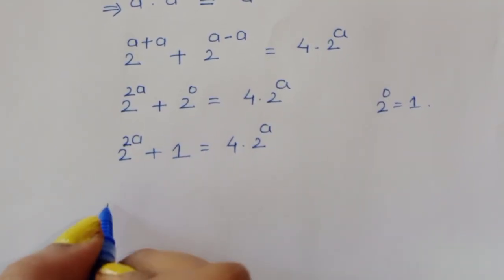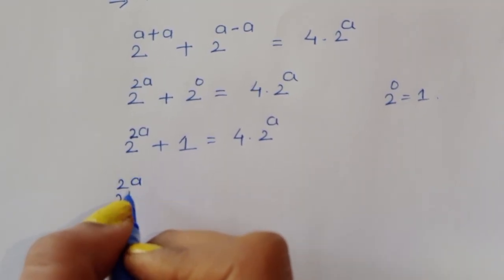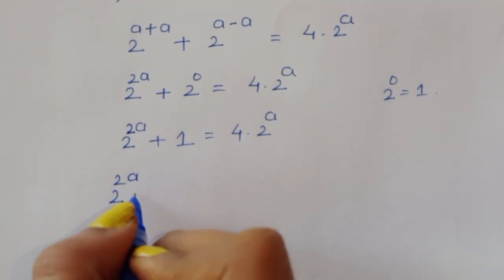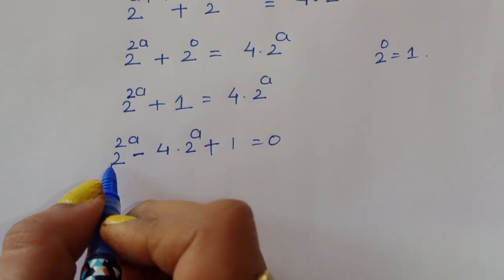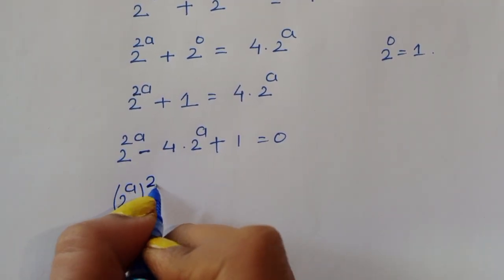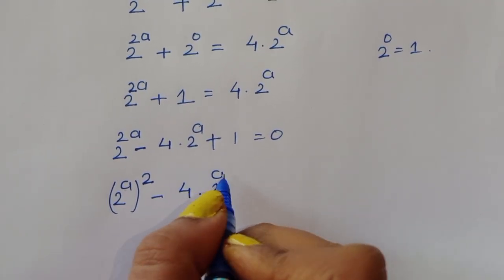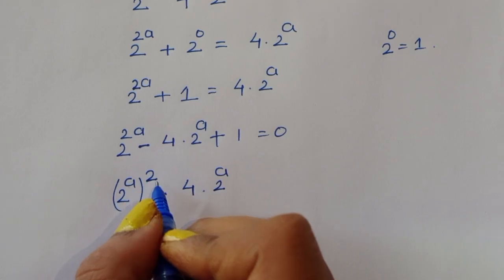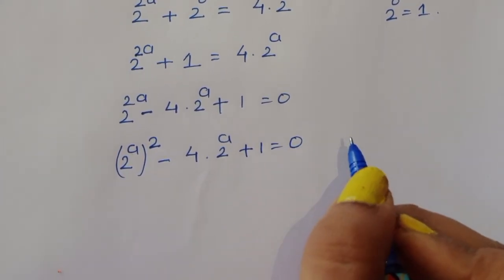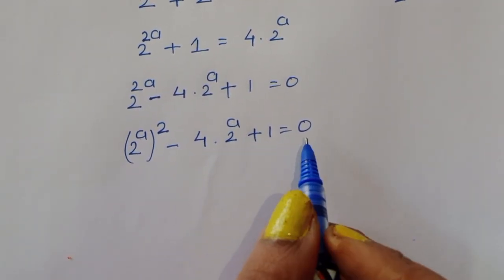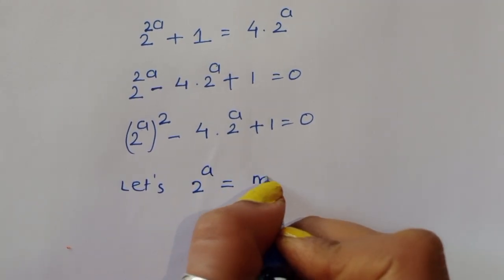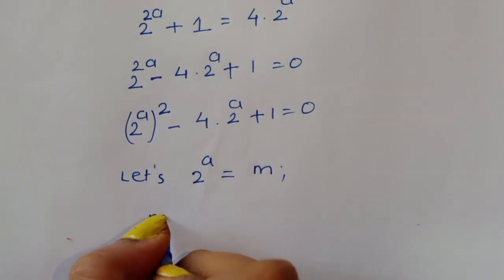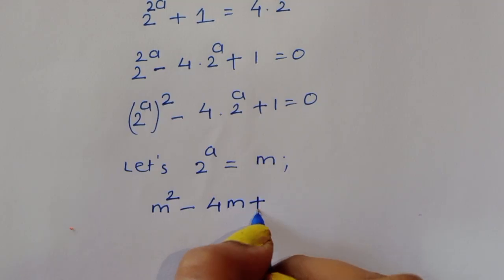Now we take all terms to the left-hand side: 2^(2a) - 4 times 2^a + 1 = 0. We can see this is (2^a)^2 - 4 times 2^a + 1 = 0. Let's substitute: let 2^a = m. So it becomes m^2 - 4m + 1 = 0. This is equation 1.